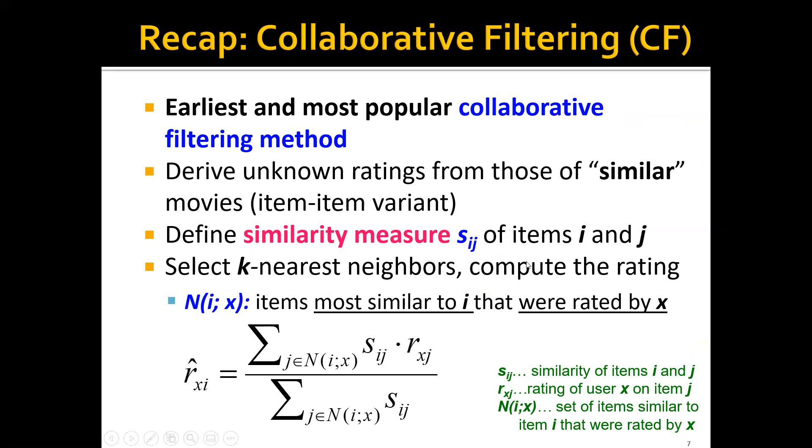And we're going to select the k nearest neighbors and compute the ratings using this equation. So as we can see here, this N(i,x) is actually the items that are most similar to item i, movie i, that were rated by this user x. And here we're using j to index all the movies in this set. And r_xj is the rating that this user x gives movie j. So this is basically just a weighted average of all the similar ratings that this user gives.